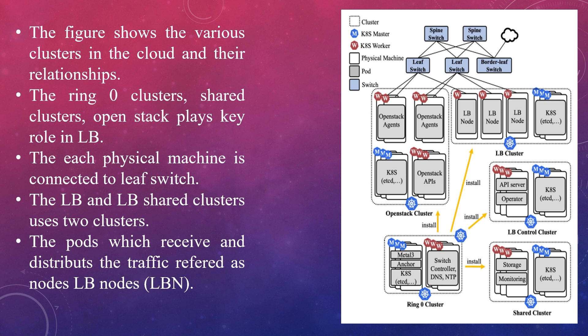The figure shows the various clusters in the cloud and their relationships. It contains different clusters such as the Ringo cluster, shared cluster, OpenStack, and load balancing control clusters. The Ringo cluster installs and manages other clusters and services, including itself. The shared cluster contains applications related to storage and monitoring, which require common access from other clusters. OpenStack contains two groups: the first group includes OpenStack API servers such as Nova, Neutron, Keystone, and CIDR; the second group involves virtual machines created by users, DHCP agents, and more. The load balancing control cluster is divided into a load balancing cluster and a control cluster, so that when a problem occurs, the load balancer remains unaffected.